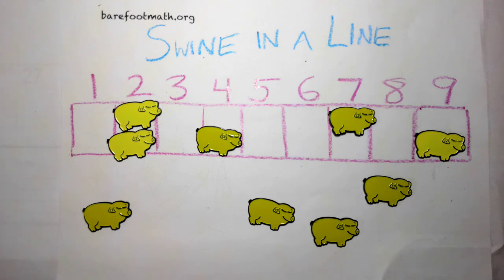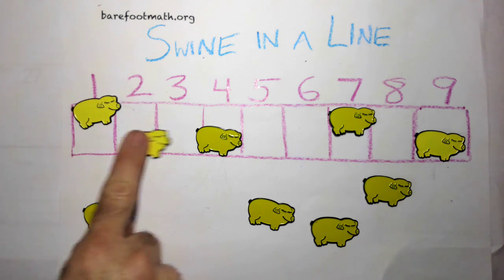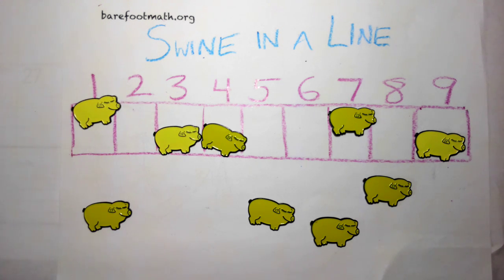The rule is, whenever a pen has two or more pigs in it, one pig in that pen jumps left, and another pig in that pen jumps right. Left, right. The chain reaction continues until every pen has at most one pig in it.